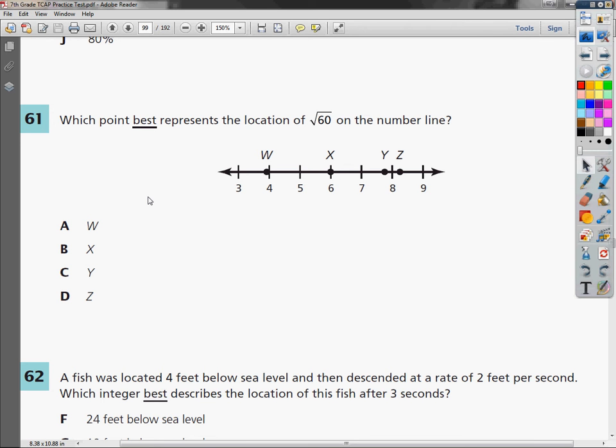Now, the number line is in integer form here. They have 7, 8, and so on. So what we need to do is figure out what the square root of 60 is in decimal form.